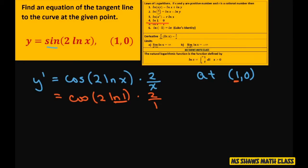So this is going to be cosine of 0 times 2. Cosine of 0 is 1. So you have 1 times 2 equals 2. So that's going to be your gradient.